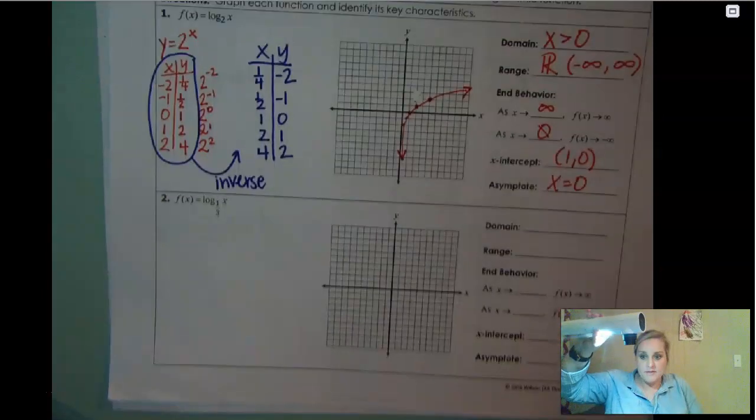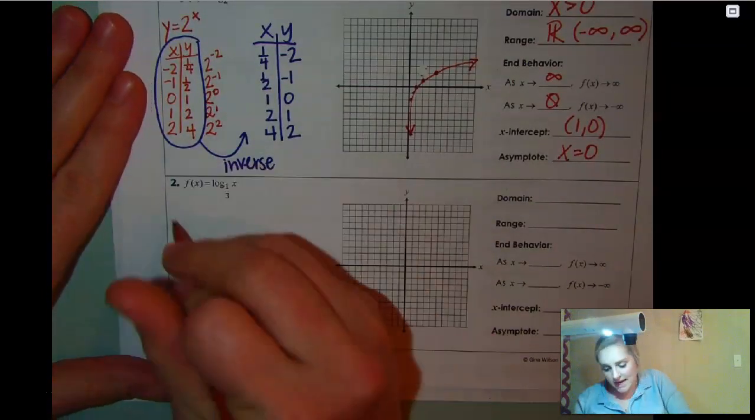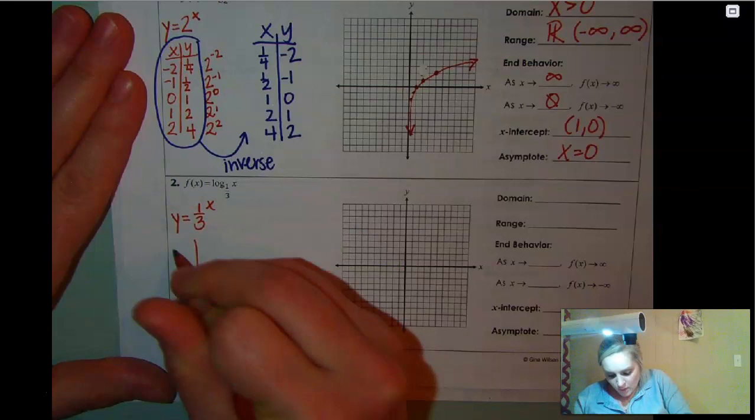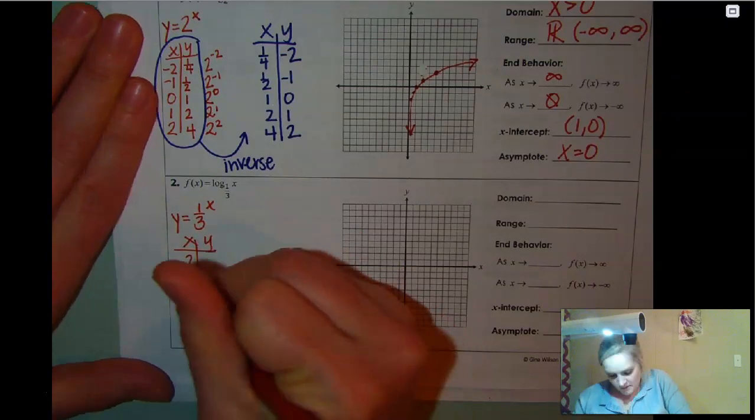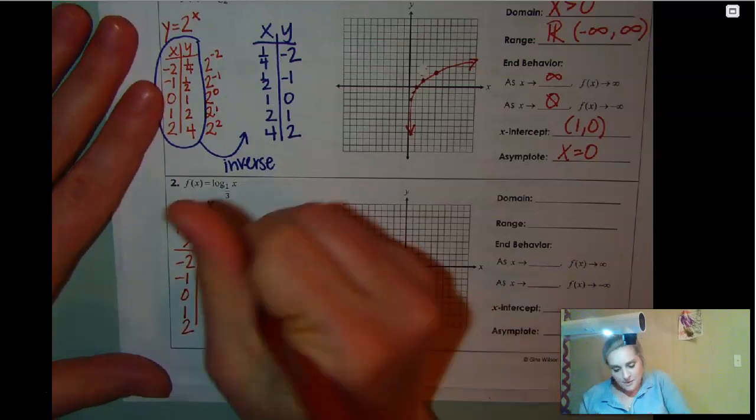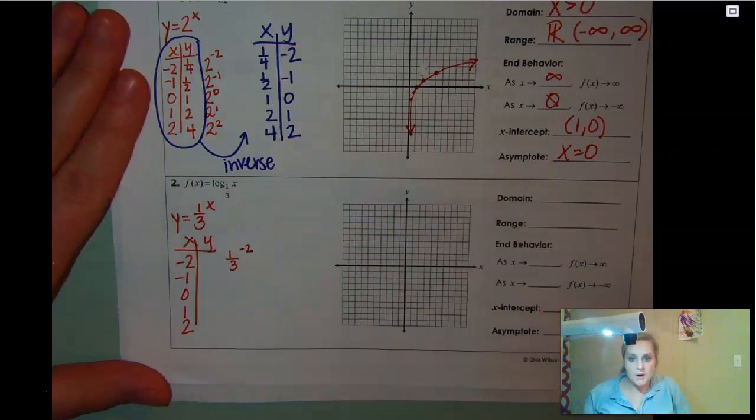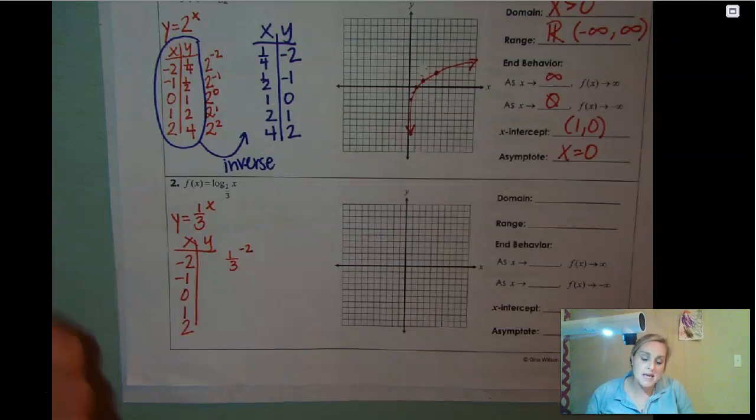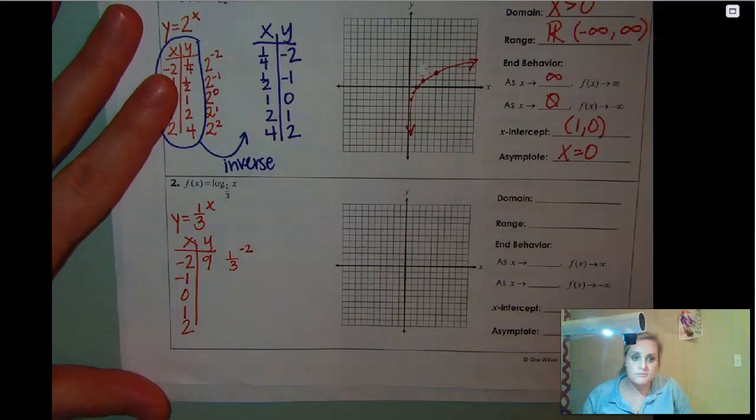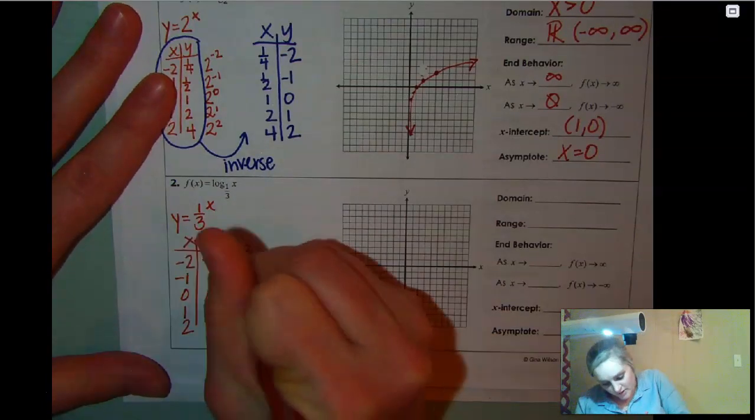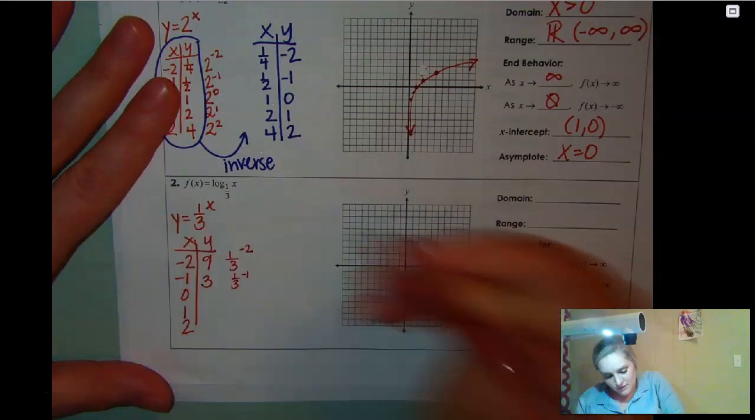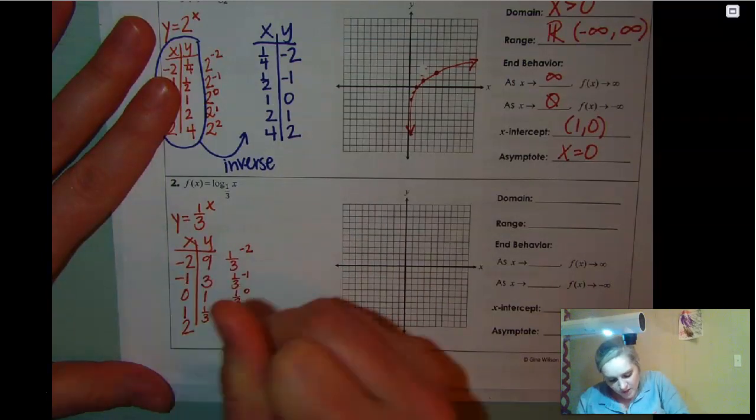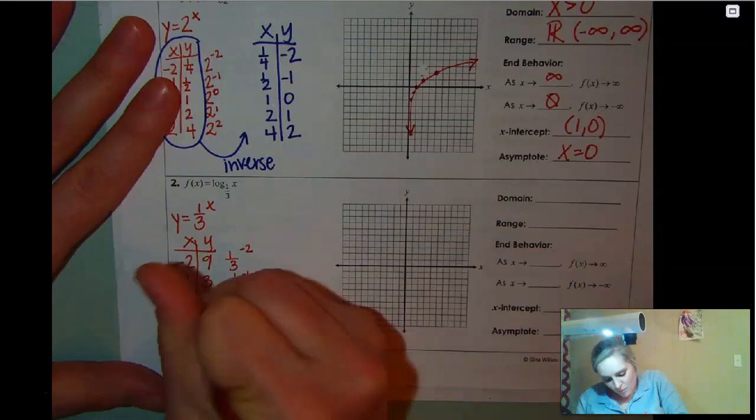Let me run through this next one very quickly. This one, same thing. If we had an exponential, it would be y equals one-third to the x power. We would make the same table: negative two, negative one, zero, one, and two. Then we would plug it in. One-third to the negative two power is actually going to end up flipping that fraction and making that positive nine. One-third to the negative one flips that fraction and gives us positive three. One-third to the zero is one. One-third to the first is one-third. One-third to the second is one-ninth.